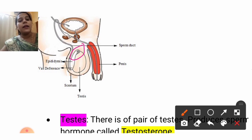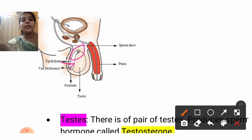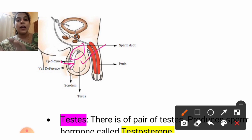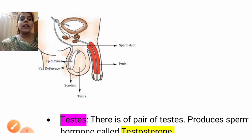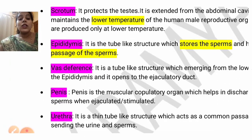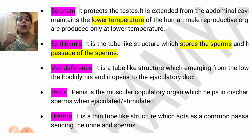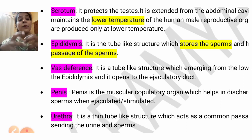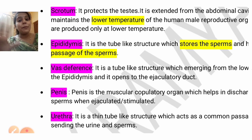This coil-like tubule structure is called the vas deferens. The epididymis is the region just attached to the testes. It helps in storing the sperms being produced by the testicles. Next, the most important part is the penis. The penis is actually a muscular copulatory organ — it is completely made up of muscles.